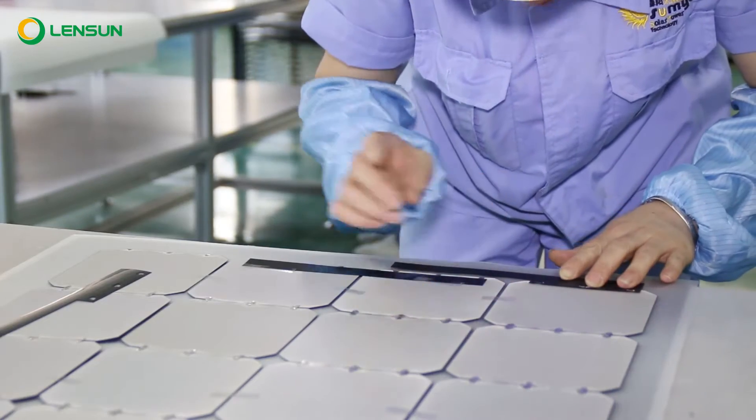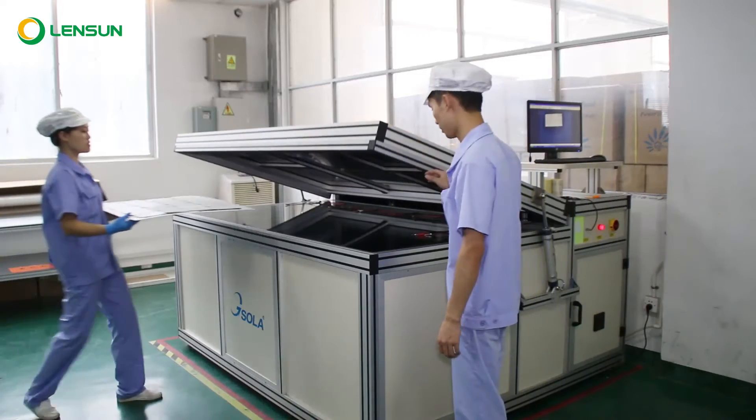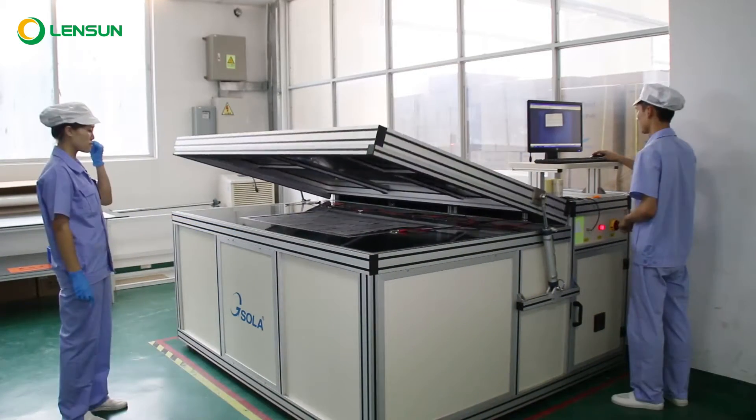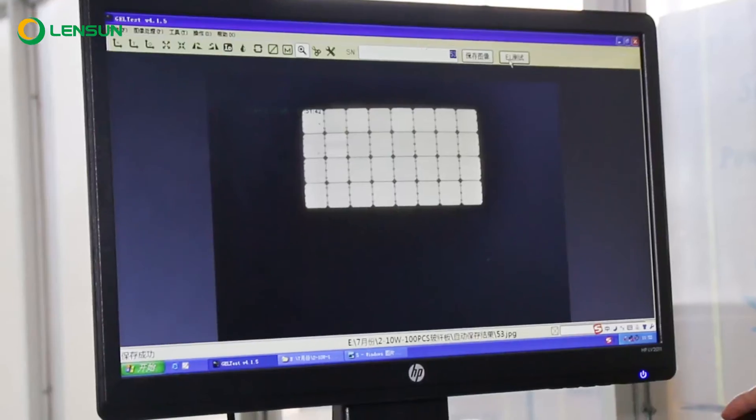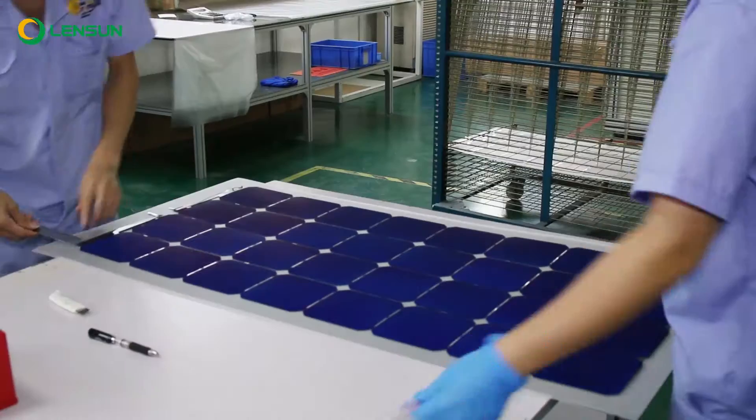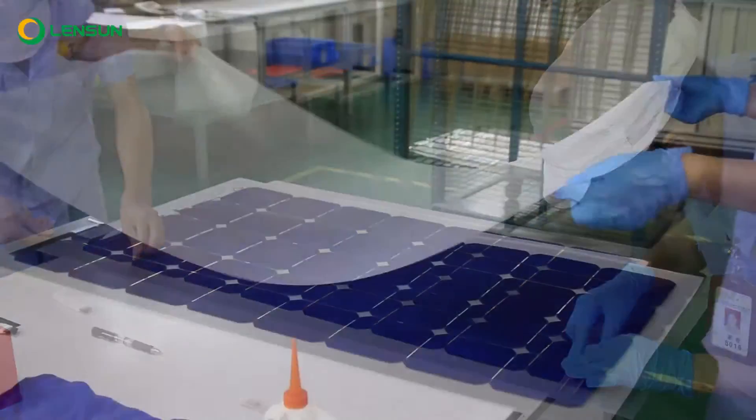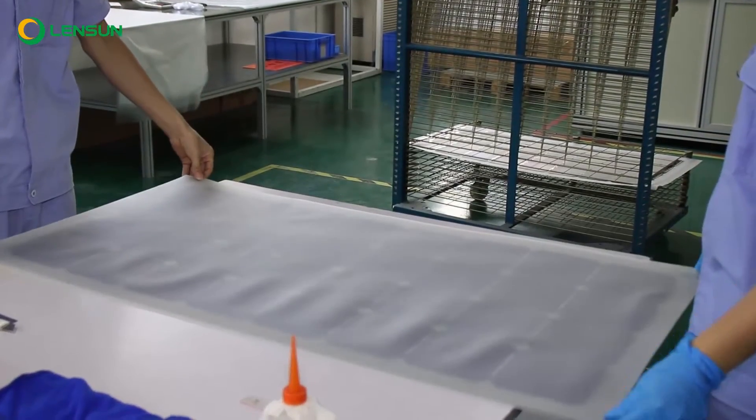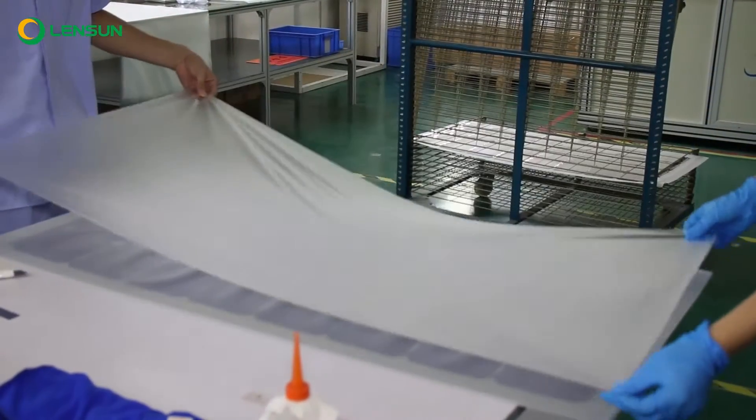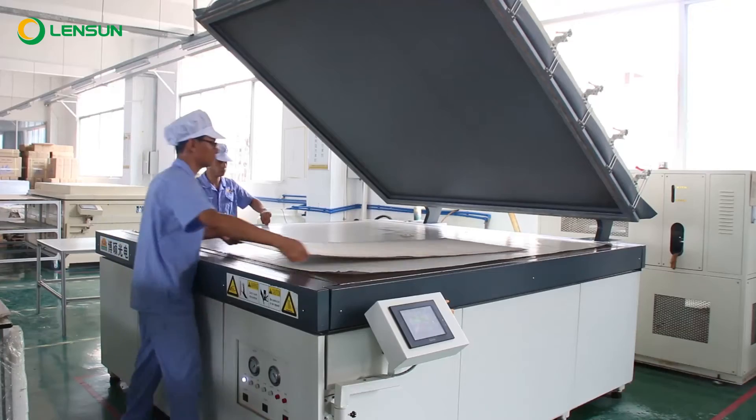Lensun solar products are widely applied to outdoor sports like fishing, camping, exploration, field forces, medical care, and more. They can satisfy the special requirements of solar applications for different vocations and countries around the world.